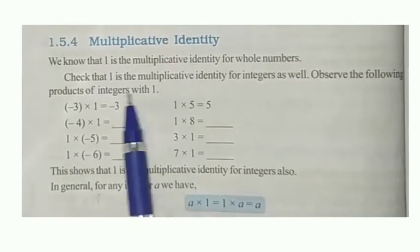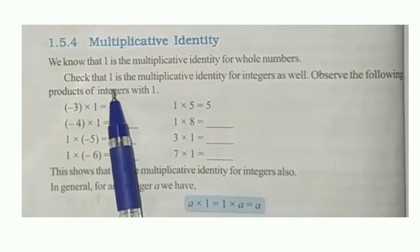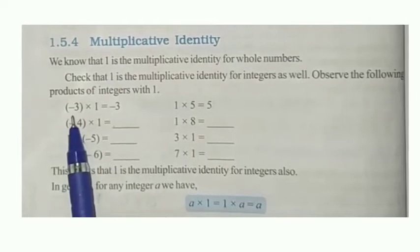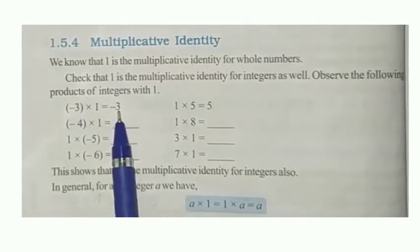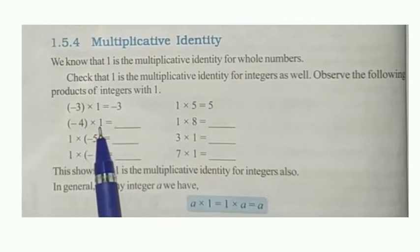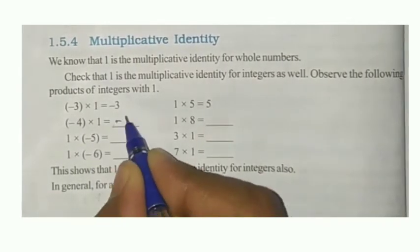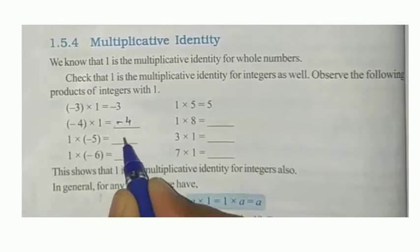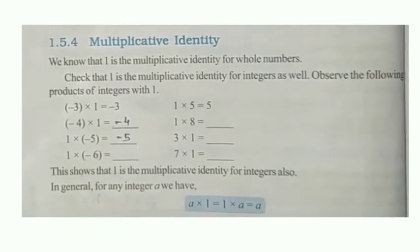Now, multiplicative identity — that is 1. Whenever you multiply any number by 1, you get the same number again. Minus 3 into 1 gives minus 3; minus 4 into 1 gives minus 4; 1 into minus 5 gives minus 5 only. Try others also, you will get the same thing.